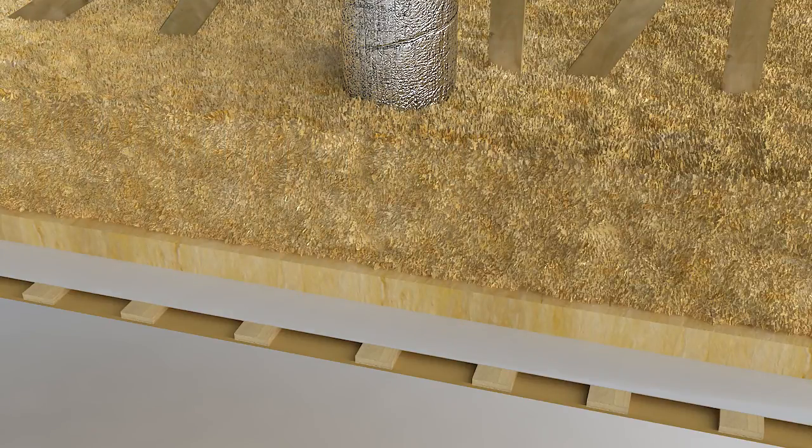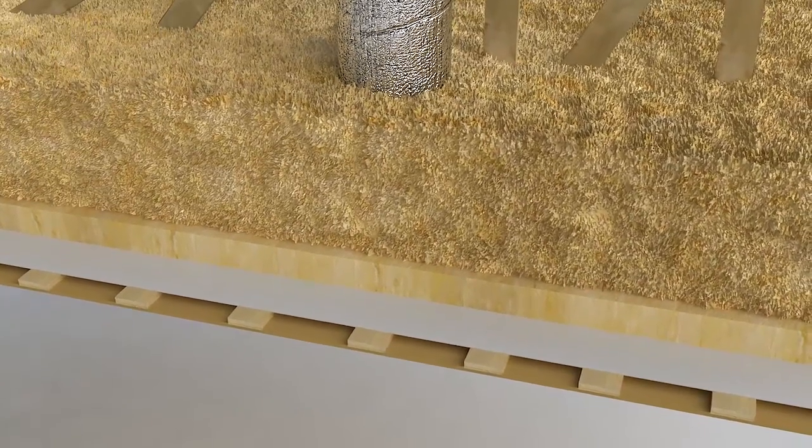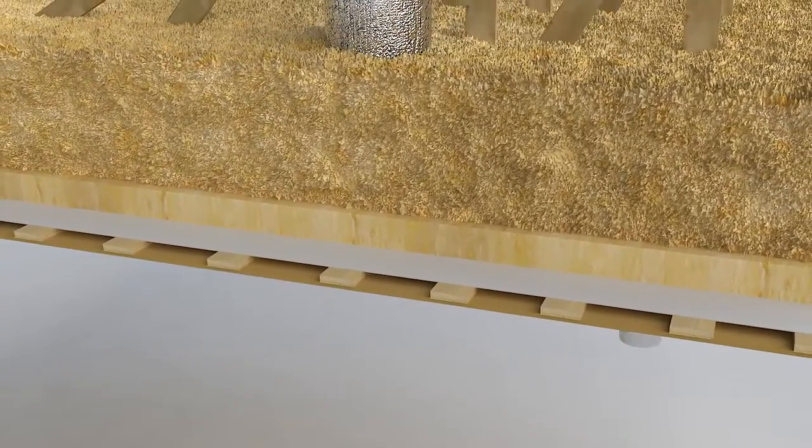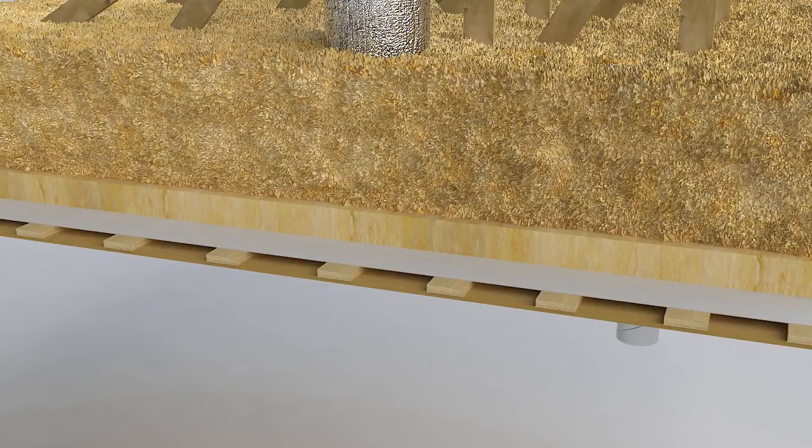When a duct is run from an attic space into room areas through moisture barrier plastic, the duct should also be insulated at the point where it passes through. This succeeds best with the Isover Vario feed through seal, which has been specifically developed for the purpose and is available for all duct sizes.